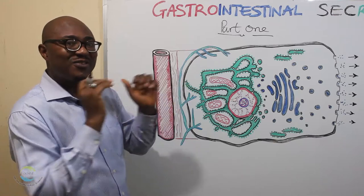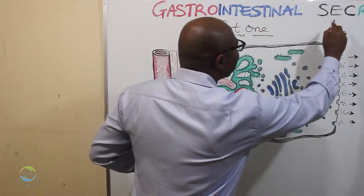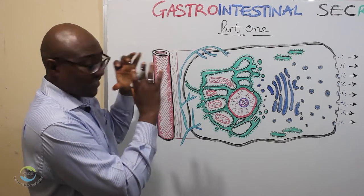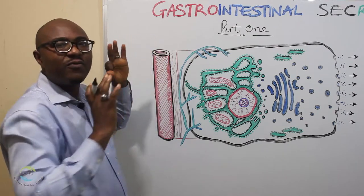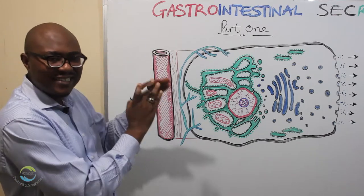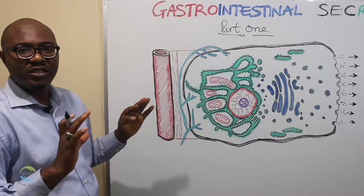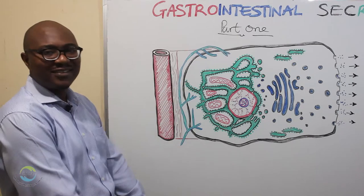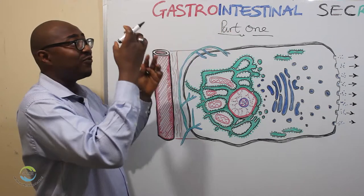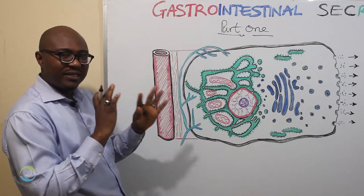Let's get started with gastrointestinal secretion. In our introductory lectures, we said that the cardinal functions of the GIT are motility, secretion, digestion, and absorption. In earlier lectures we dealt with motility functions from the mouth down to the anus. Now we are going to do the same thing for the secretory functions of the GIT from the mouth down to the anus.